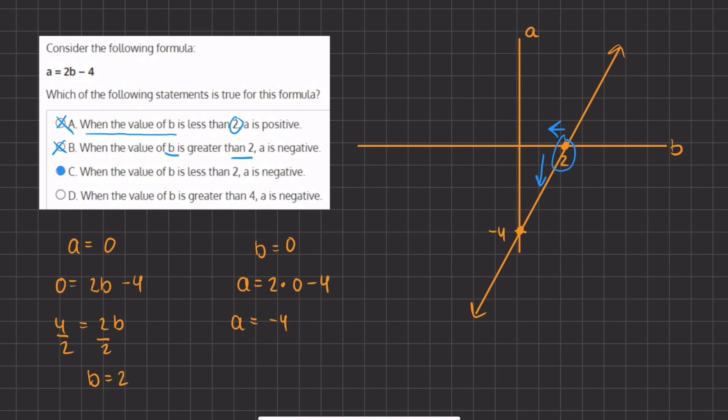And let's see why d is incorrect. d states, when the value of b is greater than 4, so that's around here, greater than 4 is in this direction, then a is negative. Well, we see that all the a values keep growing once we move further to the right of the b values, and therefore the a will also become more positive and not negative. Therefore, d is also incorrect, and c will remain our final answer.